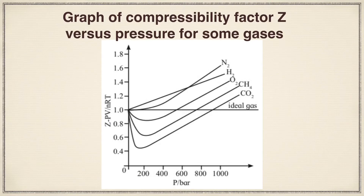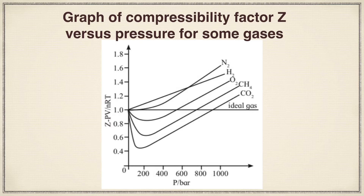You can see a graph of compressibility factor Z versus pressure for some gases. In the x-axis, pressure is plotted and in the y-axis the compressibility factor Z is plotted, that is equal to PV upon nRT. When Z equals 1, the gases behave as ideal gas, and if Z is greater than 1 or less than 1, they act as real gases. You can see a line parallel to the x-axis which represents ideal gas behavior. The graph of N2 touches that line at a particular pressure.